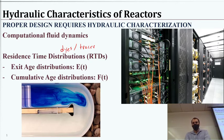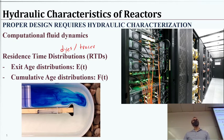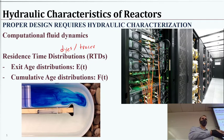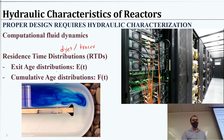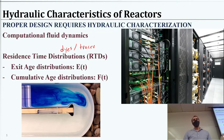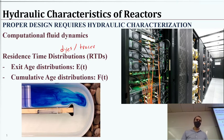We can look at this residence time in two forms. One, we could look at the exit age — the age of the water. If it was born when it entered the reactor, how old is it when it leaves? That's the exit age. So the exit age distribution means we start adding a dye or tracer; how much time has gone by before that particular dye molecule exits. We'll get some sort of distribution. In this case they're continuously adding — that's called a step addition, going from no tracer up to a full amount of tracer being added.